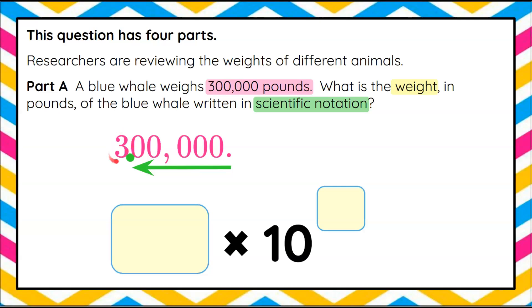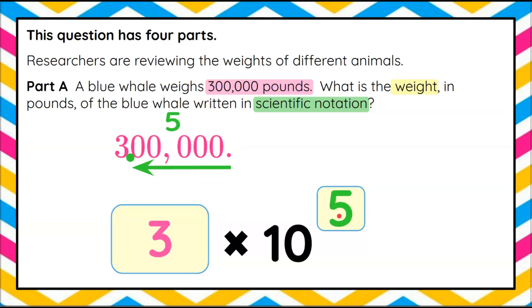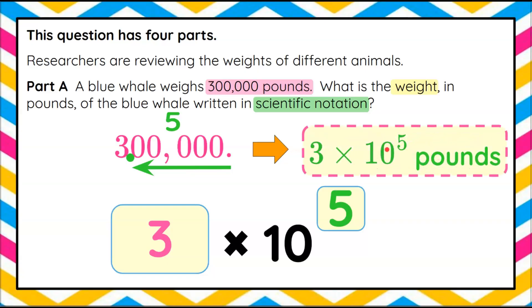So now we know that our factor is 3. To determine the exponent for our power of 10, we're going to count how many digits we moved our decimal point. We can see that we moved it five decimal places, so five is going to be my exponent. So 300,000 pounds written in scientific notation is 3 multiplied by 10 to the fifth pounds. Standard form to scientific notation.